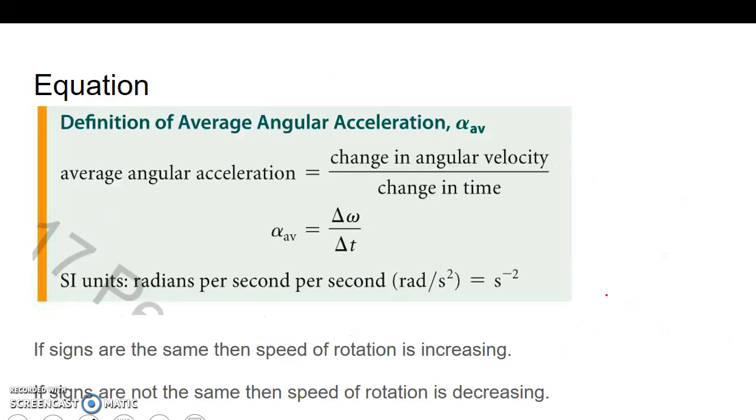Average angular acceleration: change in angular velocity over change in time, radians per second squared. If the signs are the same, then its speed is increasing. If signs are not the same, then the speed is decreasing. That's the big thing with angular acceleration, looking at your signs and keeping track of those.